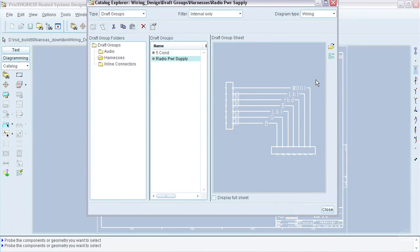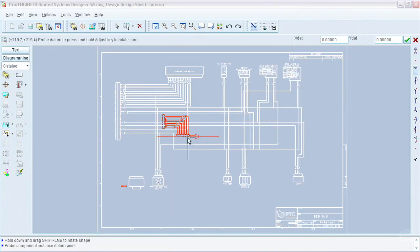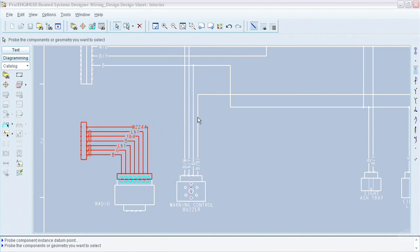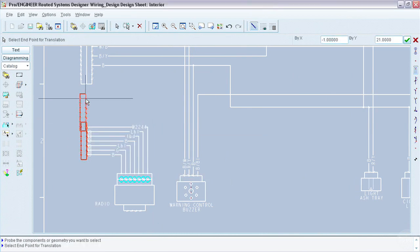An example of this could be standard harnesses which consist of three connectors and perhaps two cables. So instead of having to place the connectors and route the cables individually, the standard harness can now be placed with just one single click.